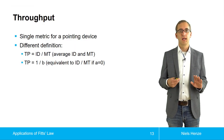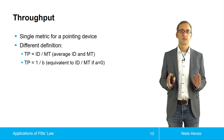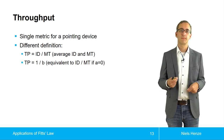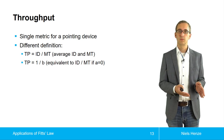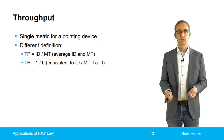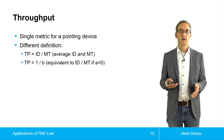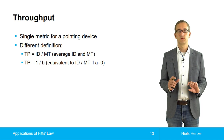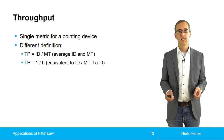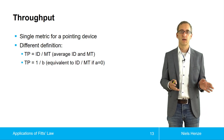Let's look at a more recent example using the concept of throughput — a single metric that describes user performance with an input device. One definition is that throughput equals the average index of difficulty divided by the average movement time. Another definition is throughput equals one divided by B, one of the device-specific constants. These two definitions are equivalent if you assume A is zero — A is the startup time, and while it is typically not zero, it is often very small.